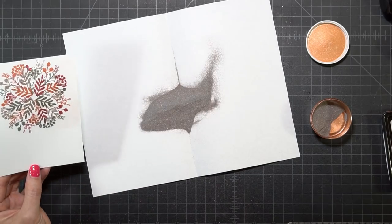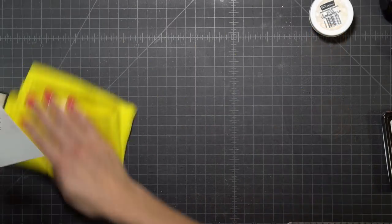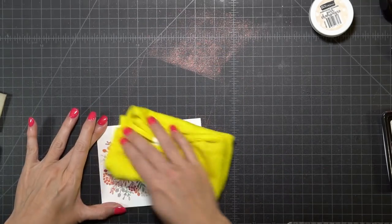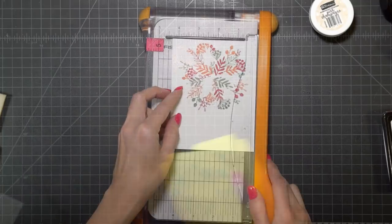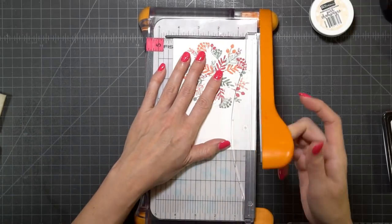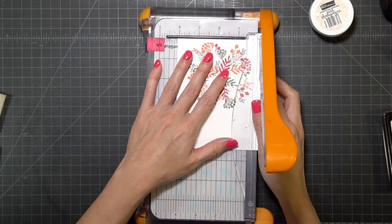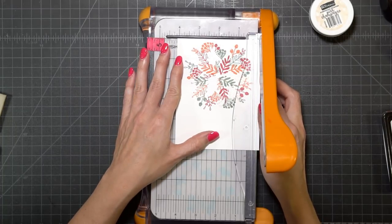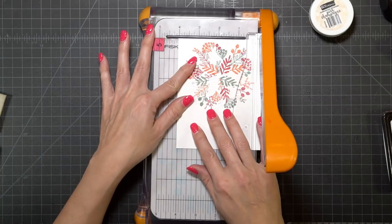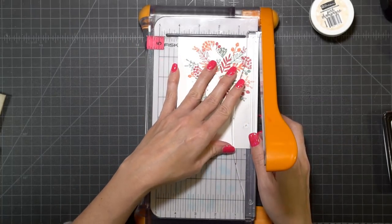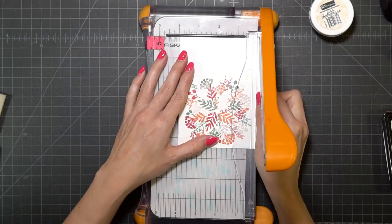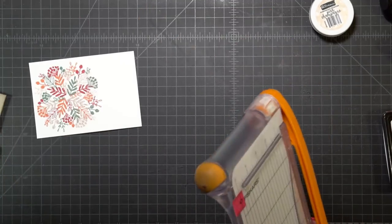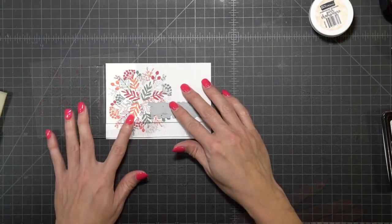Once I have that heat set with my heat gun, I'm going to clean off my work surface. You can see that I have wiped away all that color that was left behind with the embossing powder. I'm going to trim off my panel and cut a little bit off of each side. I want to put a strip of color behind each edge. I end up going to a quarter of an inch on each side.